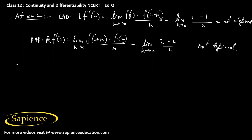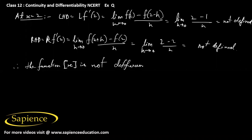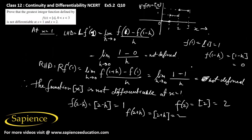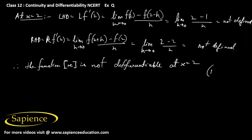Therefore the function [x] is not differentiable at x = 2. Hence it is proved that the greatest integer function is not differentiable at x = 1 and at x = 2. Hope you have understood — thank you.